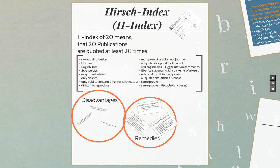The h-index is difficult to manipulate. To improve it from, say, 26 to 27, you'd need not just two more citations on one paper currently at 25 — you'd need all your other papers also at level 26 or higher to reach 27. Both the number of papers and the number of citations per paper matter simultaneously, making manipulation very hard.